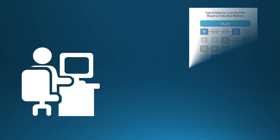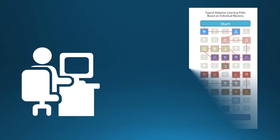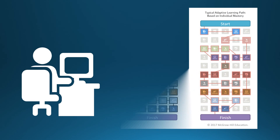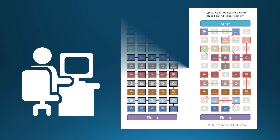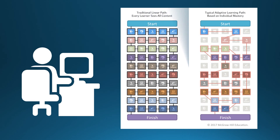By tracking responses, adaptive learning tools respond to learners' needs by changing the learning path to suit unique individual behaviors and answers. This differs from other learning tools and instructional strategies that provide one path for all learners.